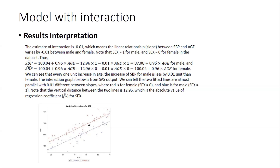If you have a tiny difference in slope, the lines just look parallel. On average, the predicted systolic blood pressure for female is higher than for male. The vertical distance between the two lines is about 12.96, which is the absolute value of the regression coefficient beta 2 for sex. Beta 2 for the sex term is specifically interpreted as the expected difference in systolic blood pressure between male and female.